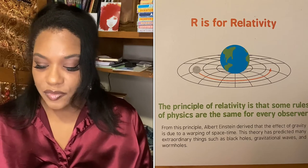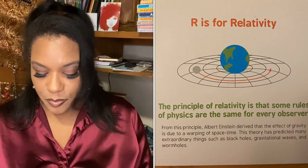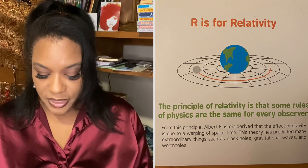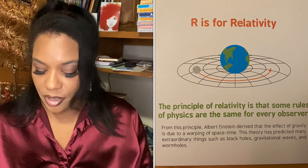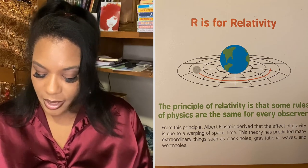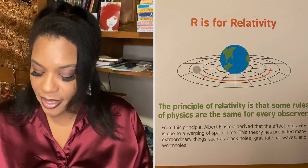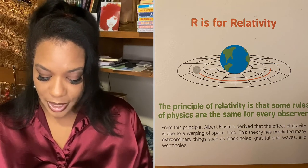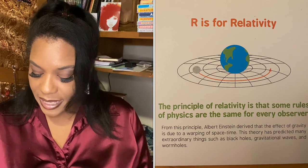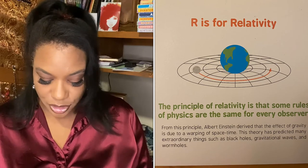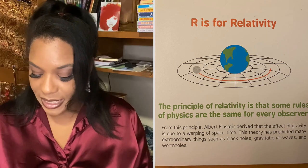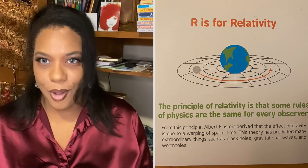R is for relativity. The principle of relativity is that some rules of physics are the same for every observer. From this principle, Albert Einstein derived that the effect of gravity is due to a warping of space-time. This theory has predicted many extraordinary things such as black holes, gravitational waves, and wormholes.